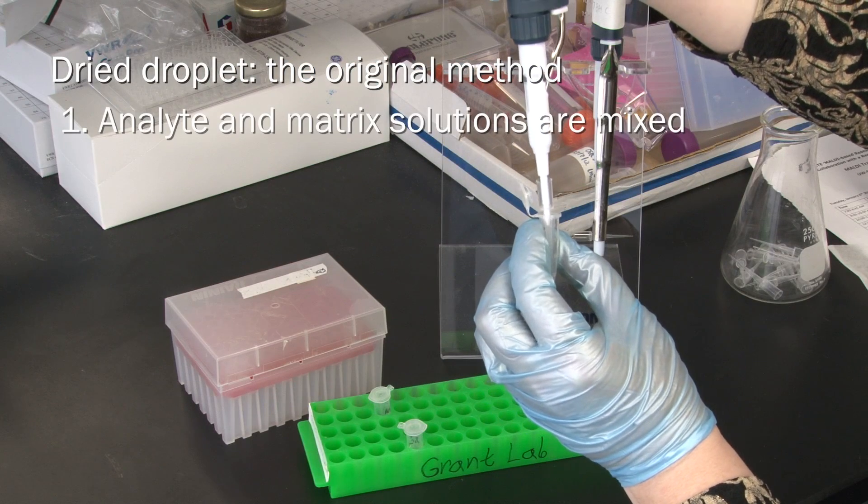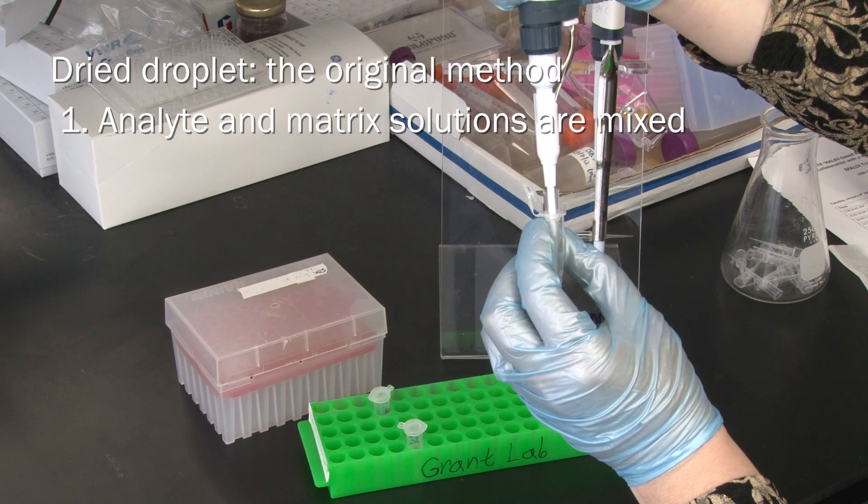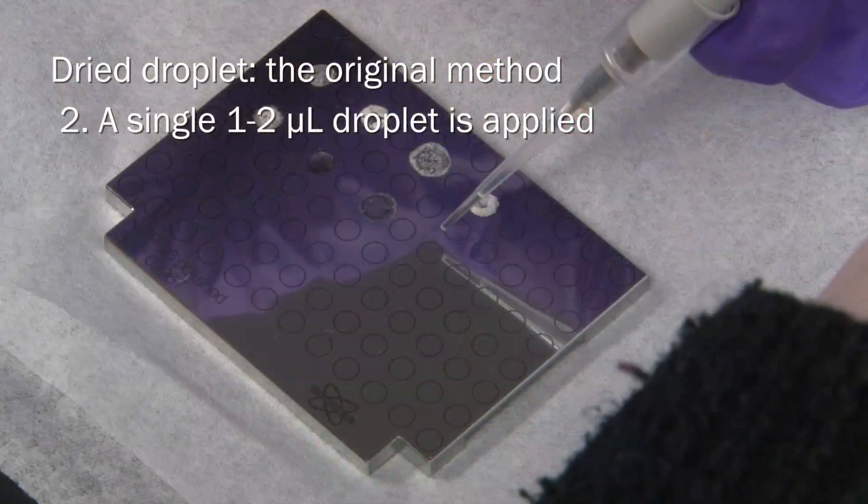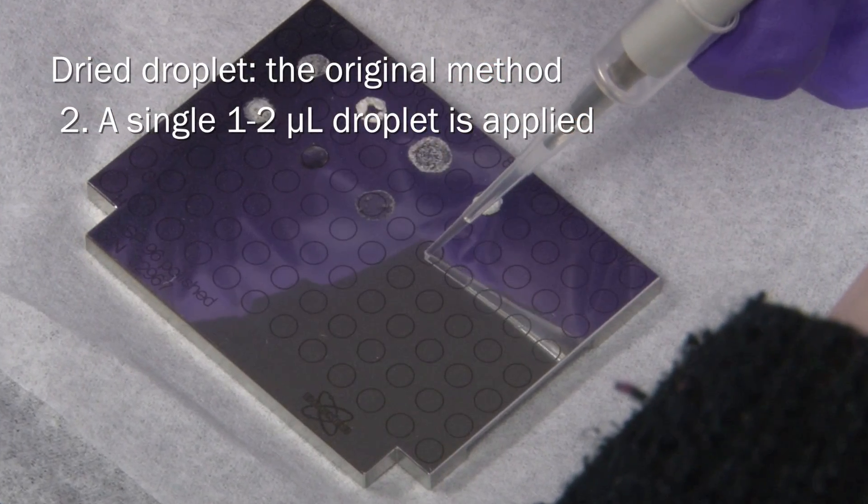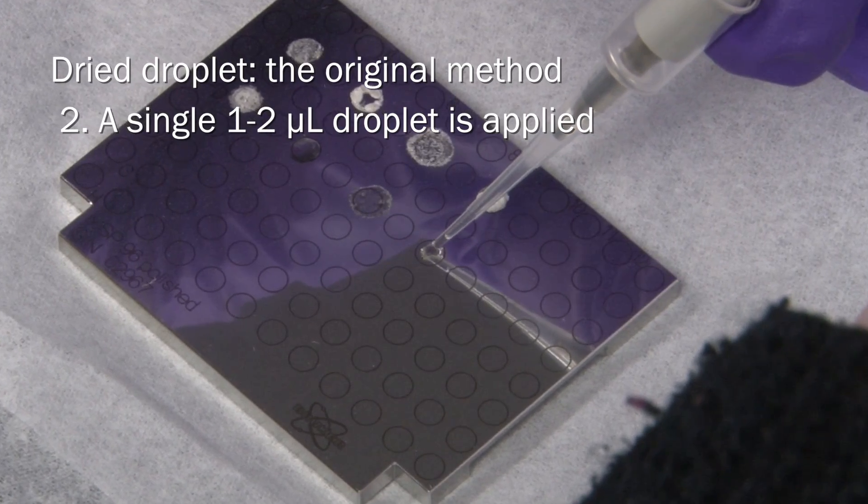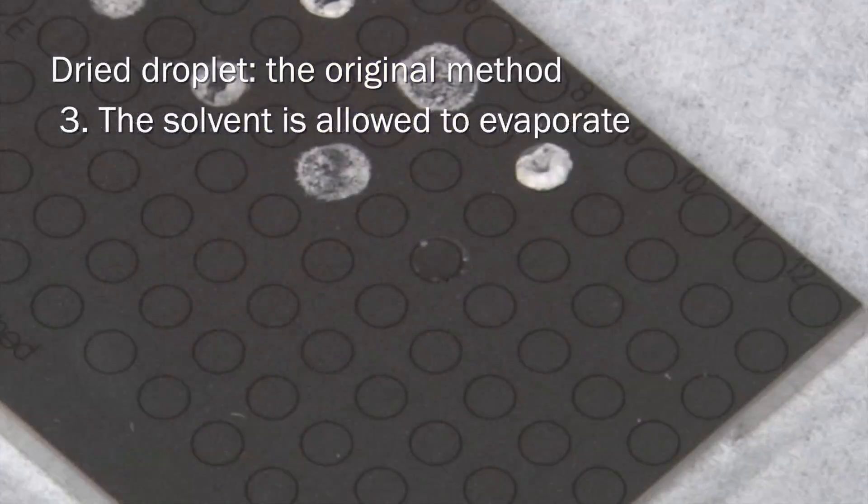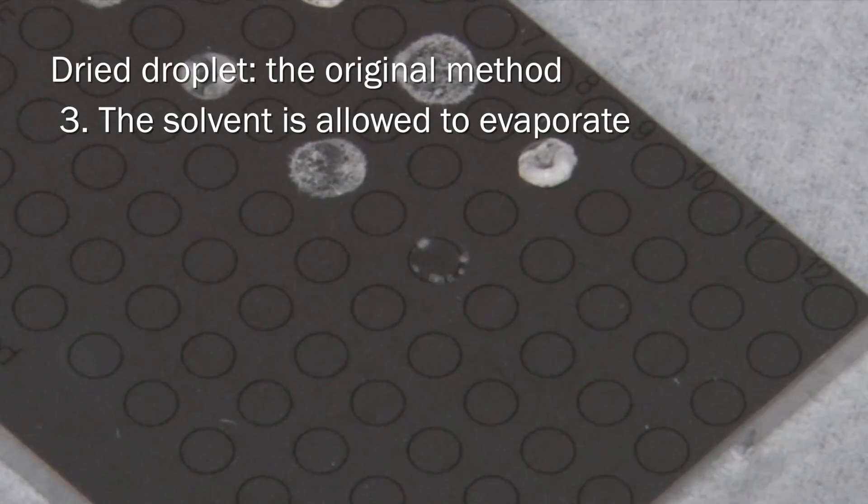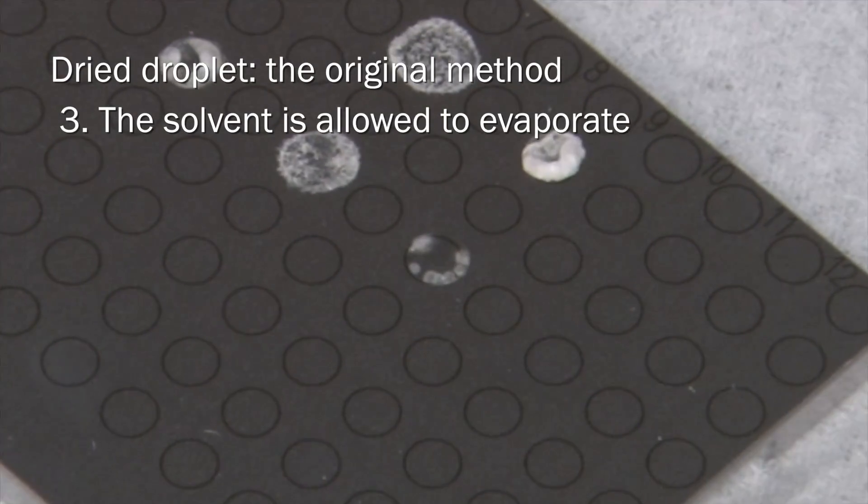In this technique, the analyte and matrix solutions are first mixed in a ratio of your choice, and then a single 1 to 2 µL droplet is applied to the target with an Eppendorf pipette. The solvent is allowed to evaporate while the matrix and analyte co-crystallize.